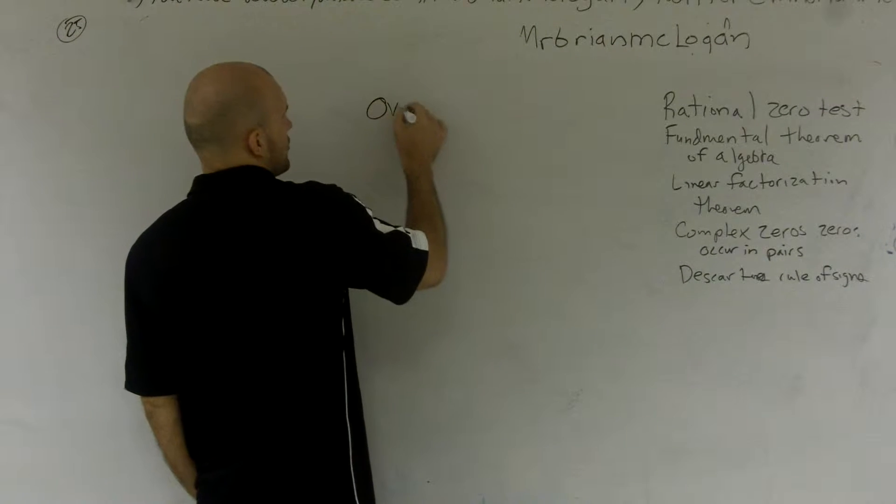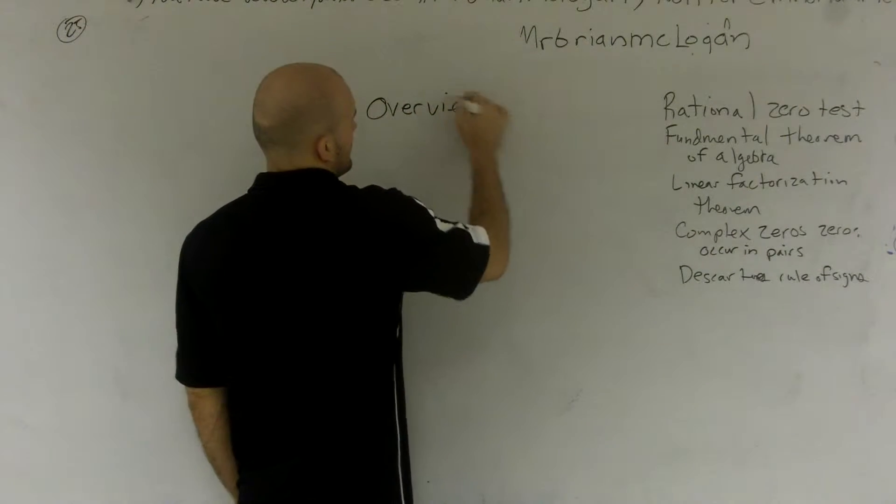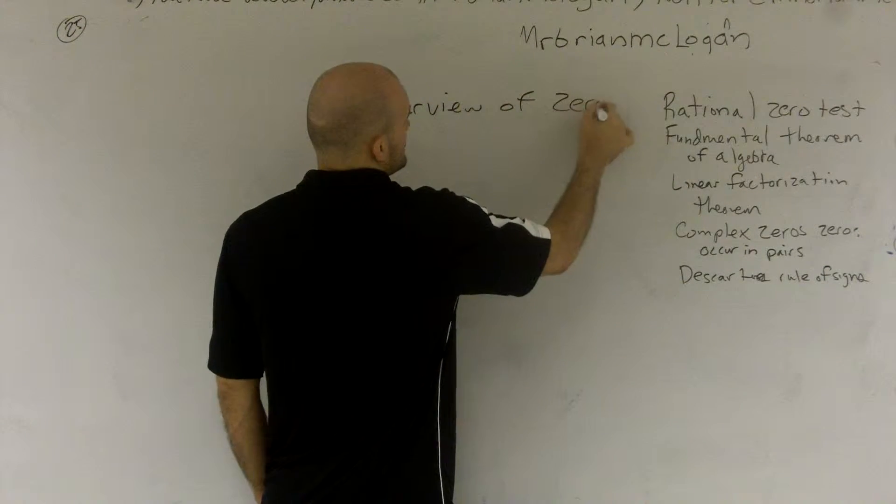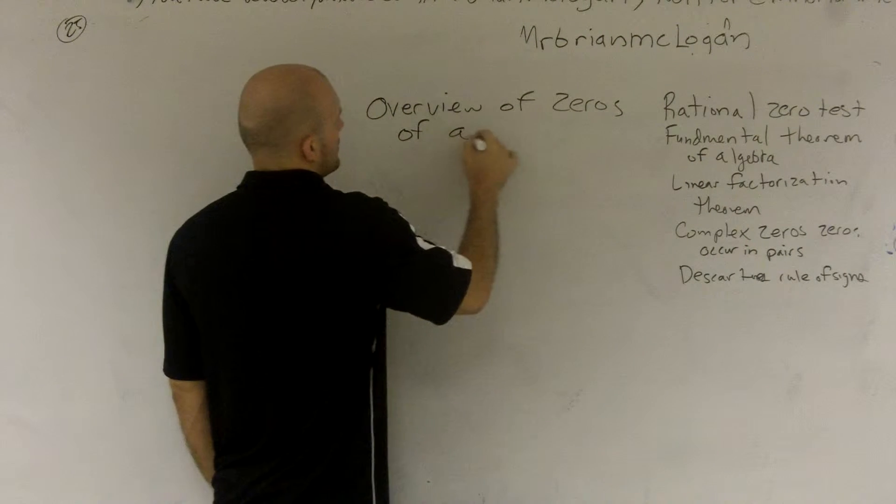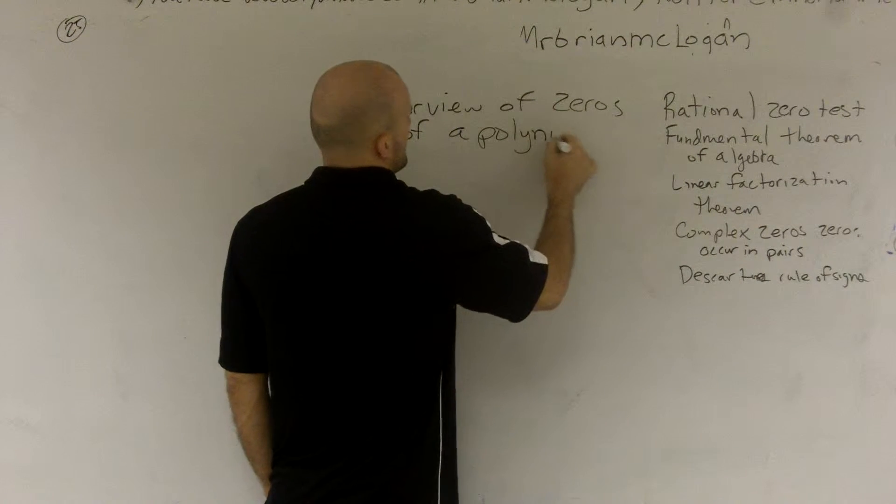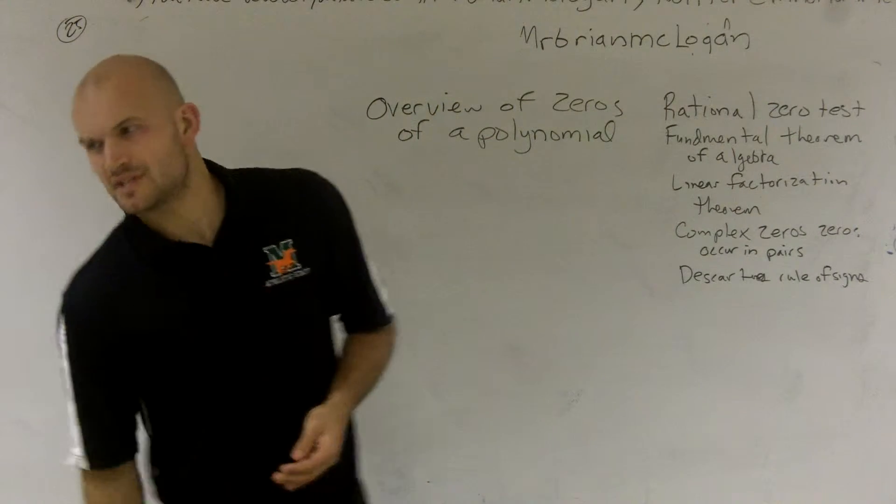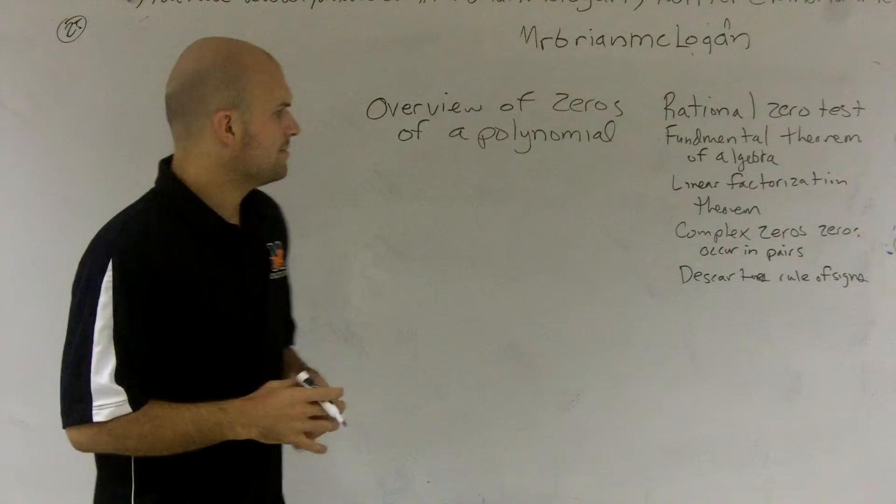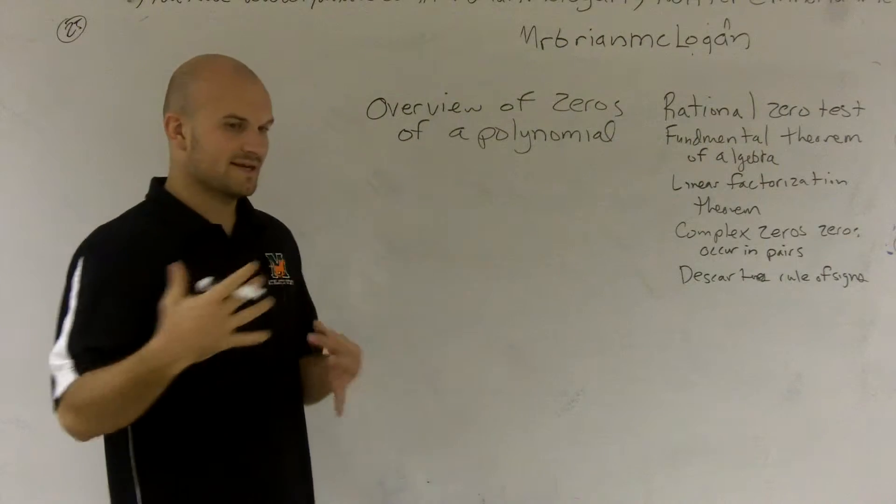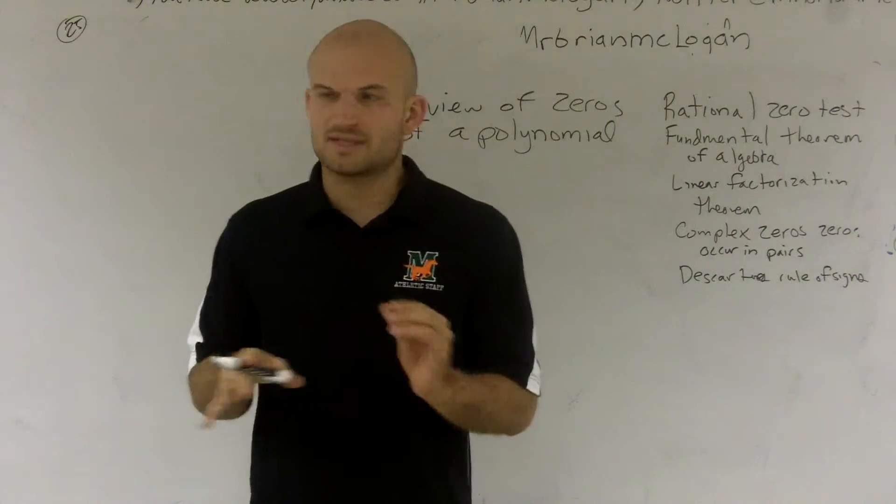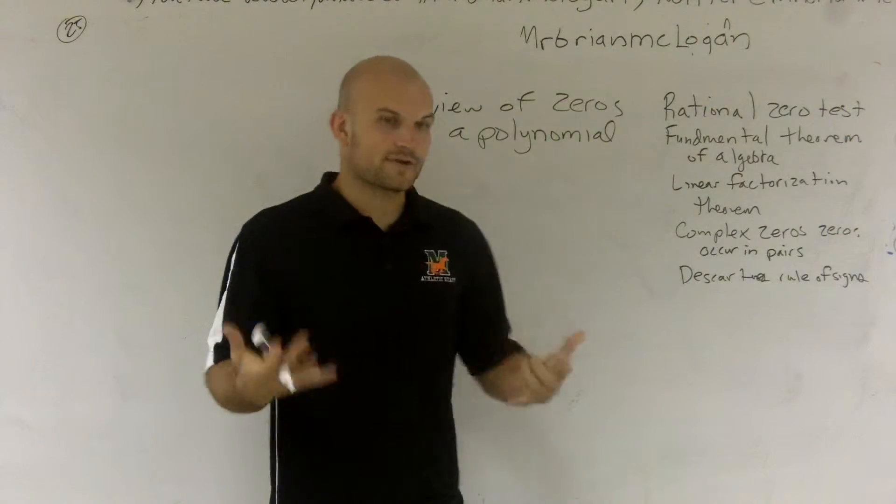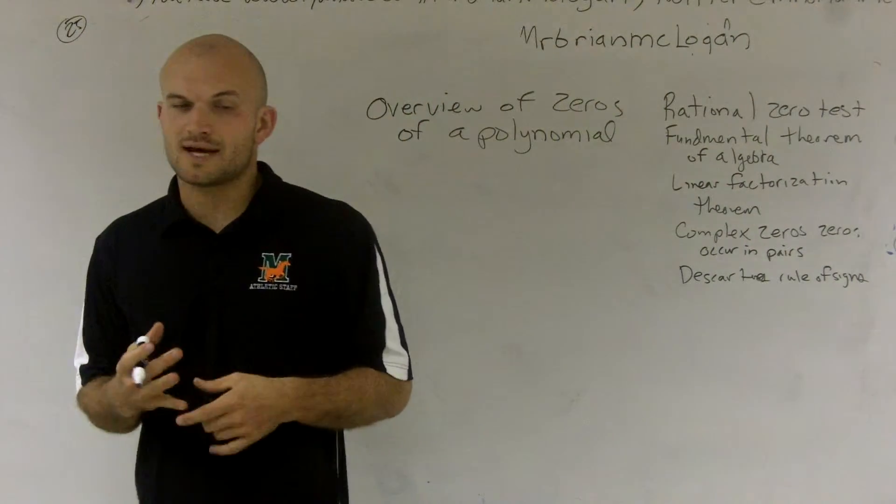Alright, what I want to talk about is an overview of zeros of a polynomial. There's a couple things I want to explain. I'm not going to go through the formal definition - you guys can find this in your book. But I just want to overview a little bit and talk about some of these definitions up here and why they're going to be important for finding the zeros.